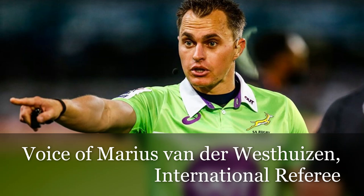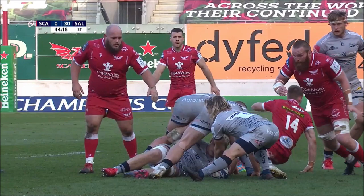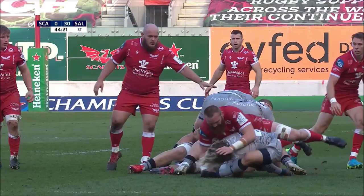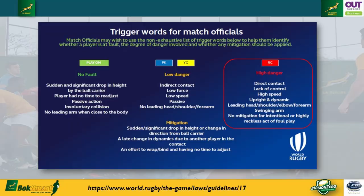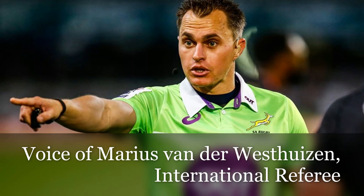The third step in the process would be for the referee to consider mitigating factors. In this instance, we cannot see any. The fourth step in the process would be to reach the outcome. Taking all the facts into consideration and the fact that there is no mitigation, the referee has to arrive at a red card.